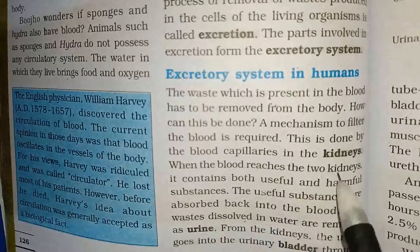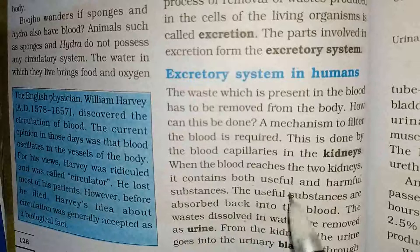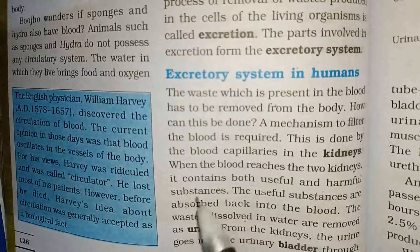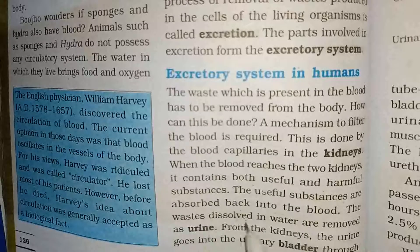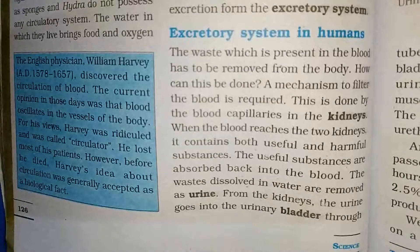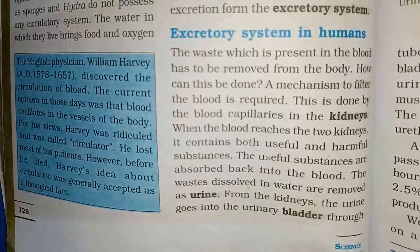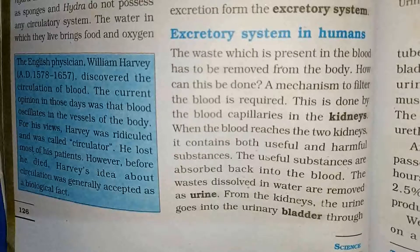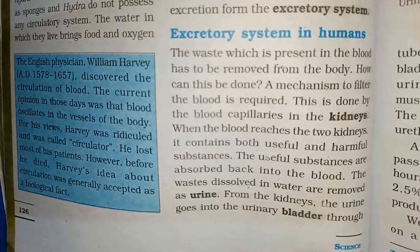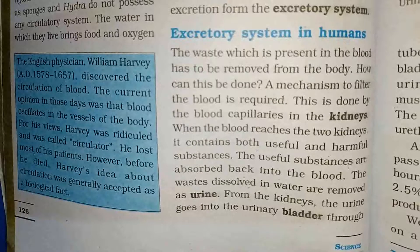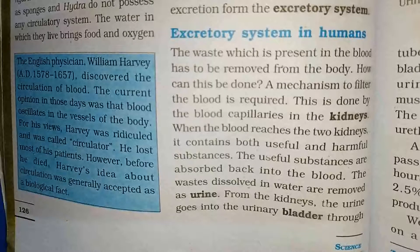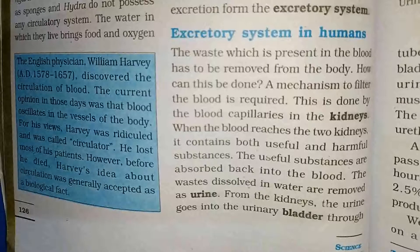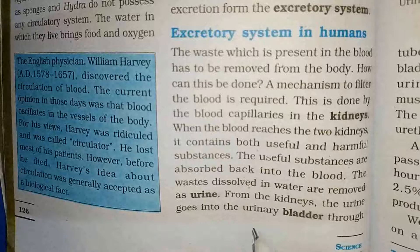When the blood reaches the two kidneys, it contains both useful and harmful substances. The useful substances are absorbed back into the blood. The waste dissolved in water is removed as urine. Hamari kidney mein blood ka filtration hota hai — useful substances blood mein absorb ho jaate hai, aur jo waste substance hai woh water mein dissolve hokar as urine body se bahar nikal jaata hai.